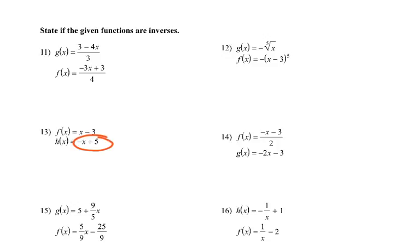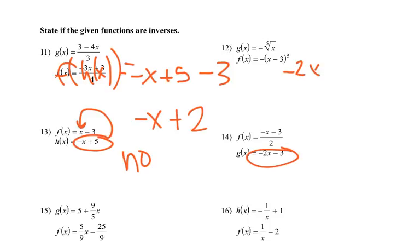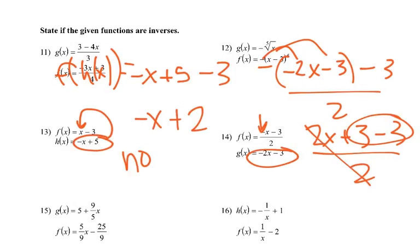Number 13: take one function and plug into the other. So f of h of x: negative x plus 5 minus 3. That gives negative x plus 2, which is not x — so not inverses. Number 14: put negative 2x minus 3 in for x. So negative(negative 2x minus 3) minus 3 over 2. The negative makes it positive 2x plus 3, minus 3 over 2. Positive 3 minus 3 is 0, and 2x over 2 cancels to x. So number 14 — yes, they are inverses.